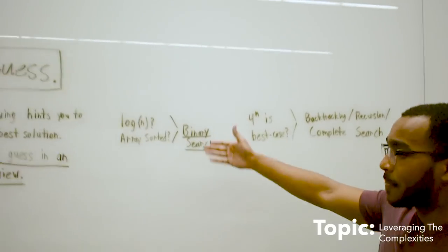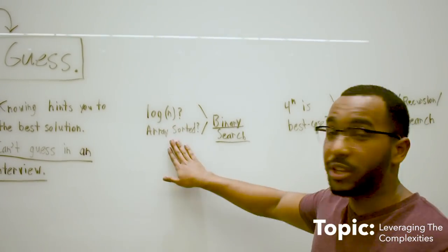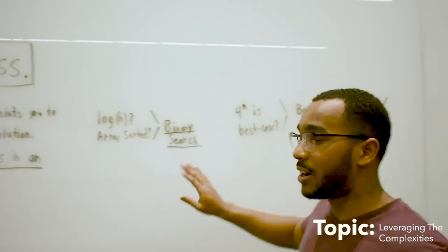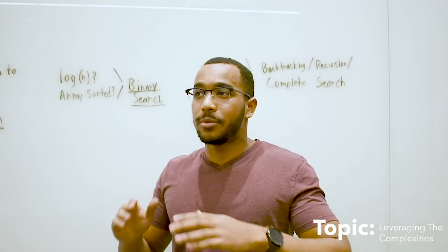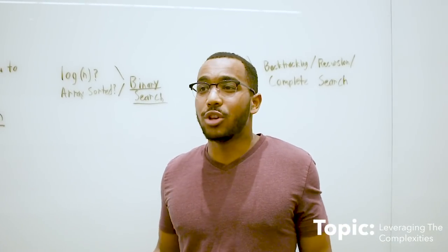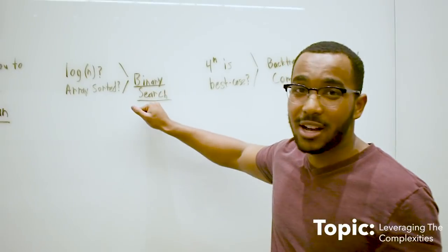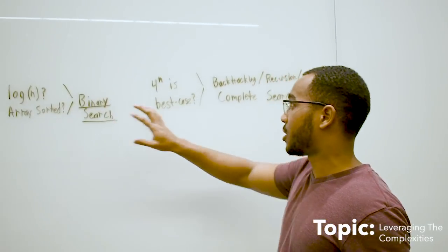Here's kind of examples. If an interviewer tells you this is going to use log n and the array is sorted, instantly you should think binary search. If an array is sorted and they want it to run in log n complexity, there's basically no other thing it could be but something that cuts the search space in half. Something binary of sorts, often binary search.